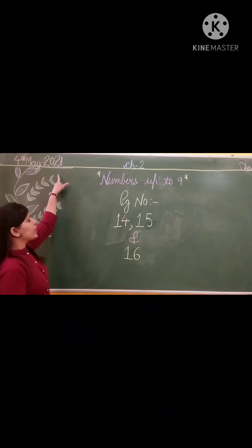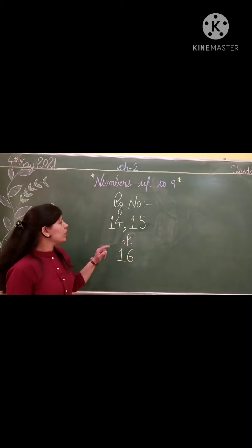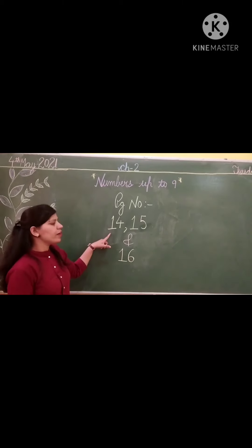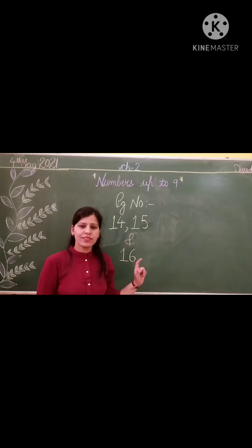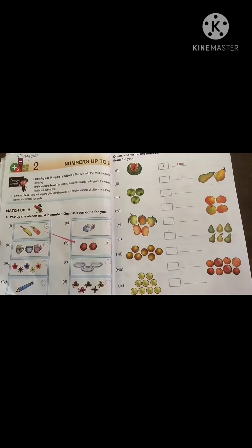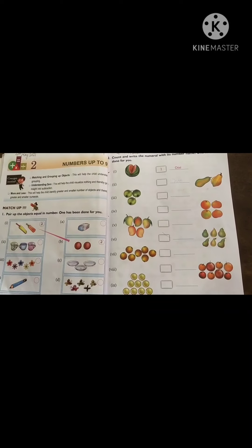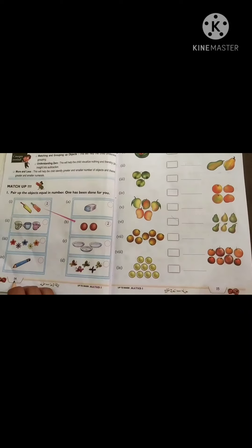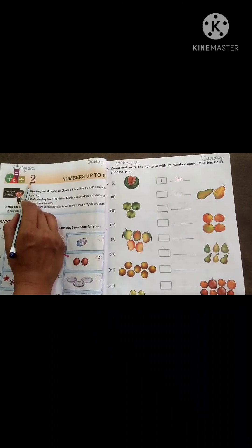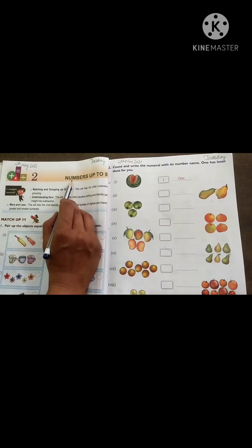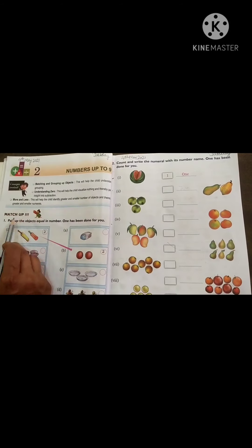Put on the date. So we will do pages number 40, 50 and 60. Now let's start. Children, open your math book, page number 14. First of all put the date. Chapter number 2. Chapter name: Numbers Up to 9. Match Up.